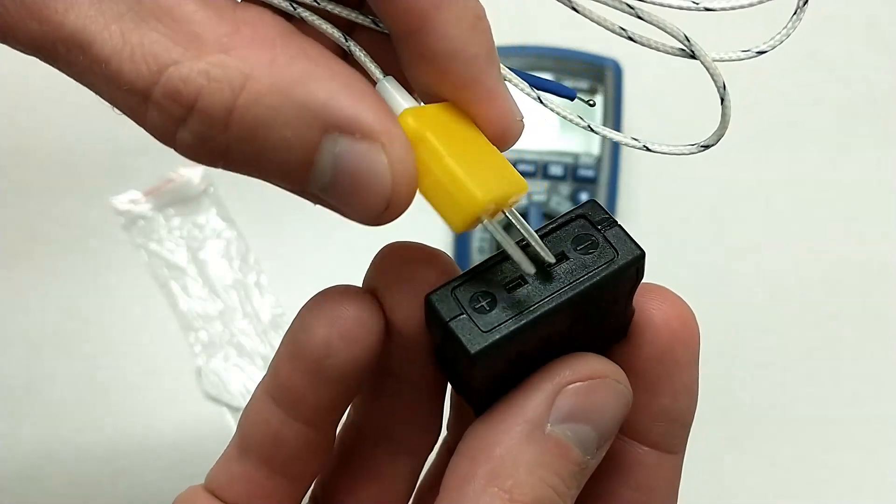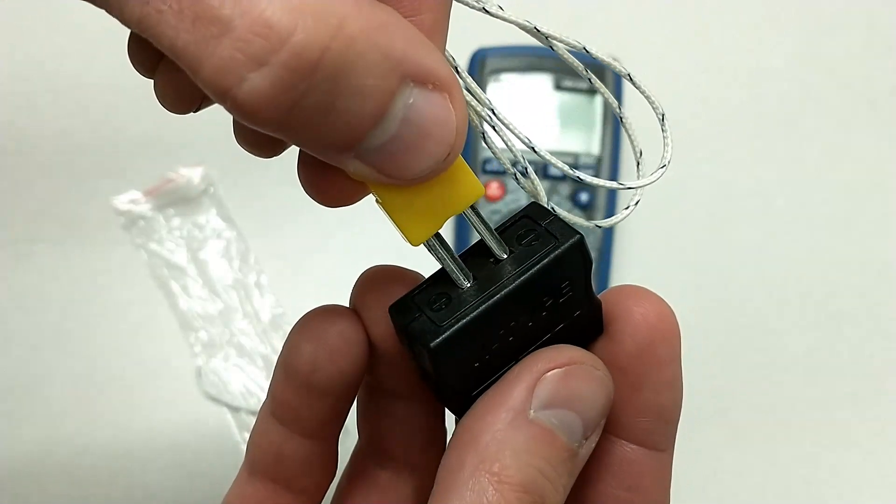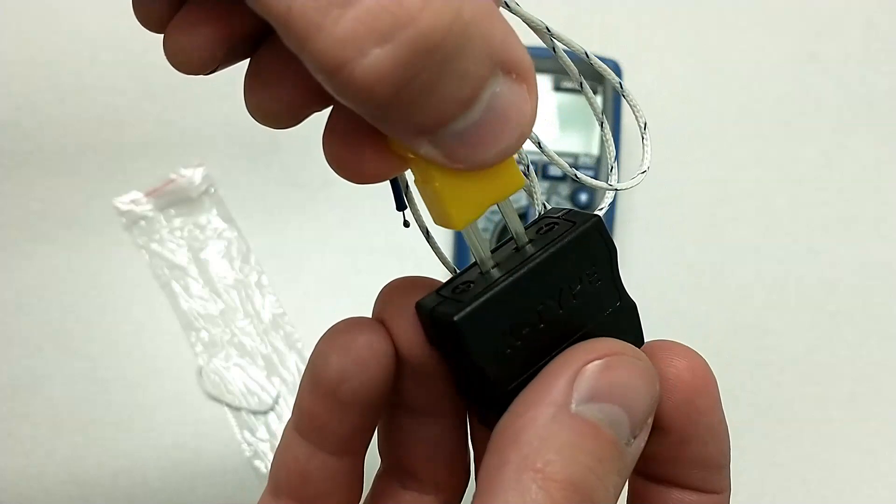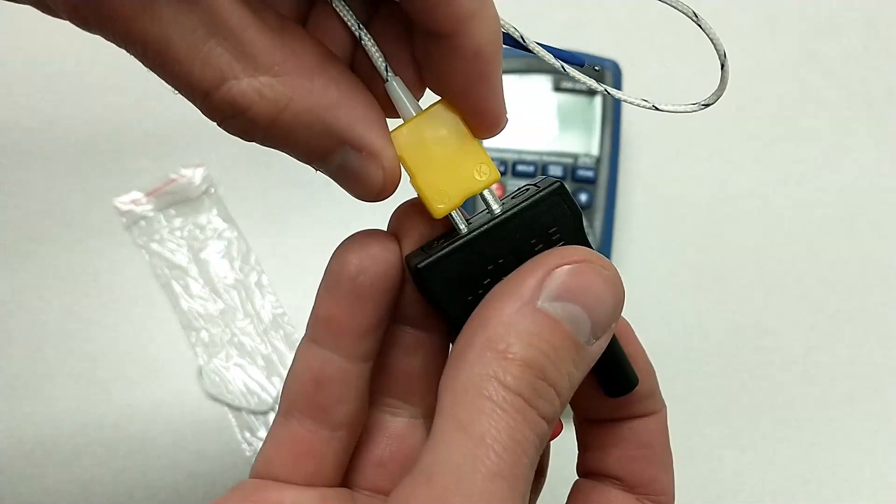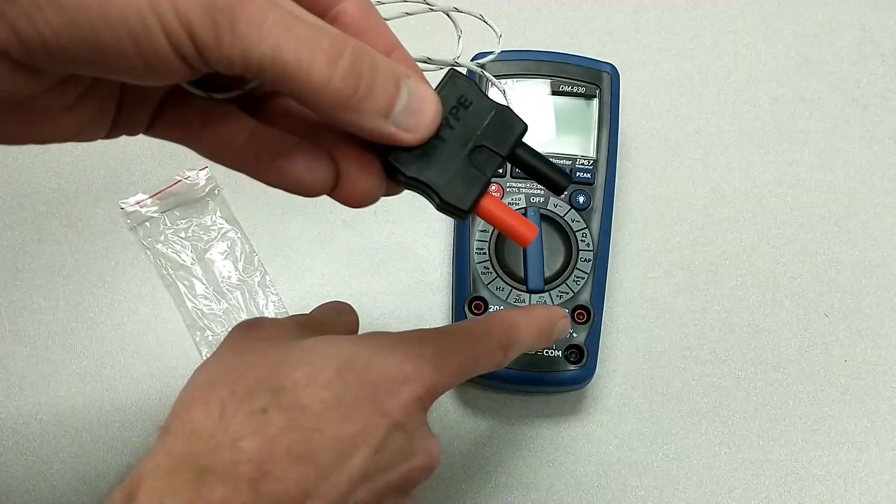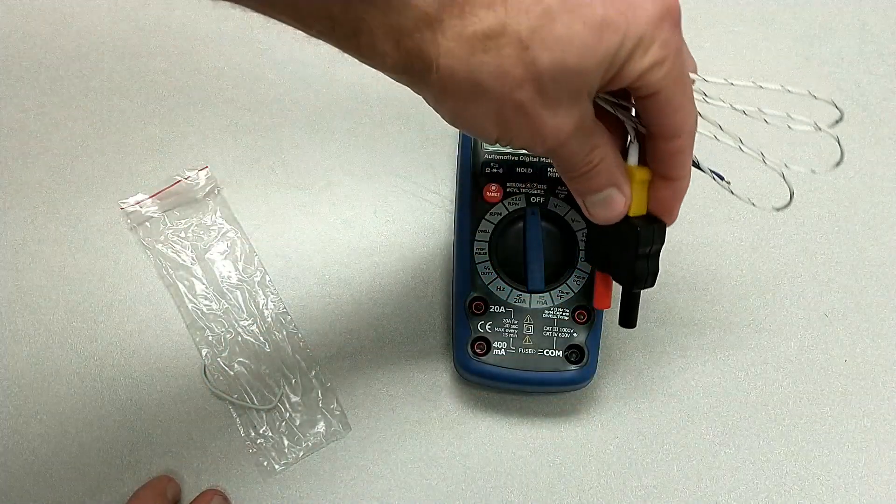On some meters, I've noticed that they can be plugged in backwards. This one doesn't work that way. It won't allow me to plug it in backwards because it has one terminal that's wider than the other. So if I connect that, and then I plug this right into the meter, again observing the polarity.